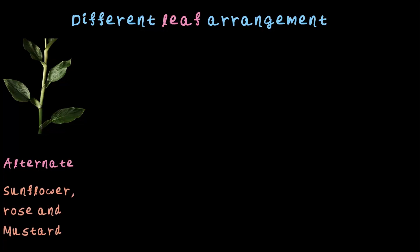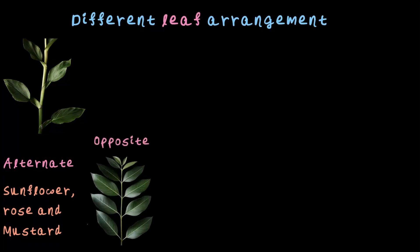Next, we have this type of arrangement called opposite leaf arrangement. As the name suggests, it's pretty straightforward. The leaves are arranged opposite to each other or they grow opposite to each other. You will see this in plants like guava and neem.